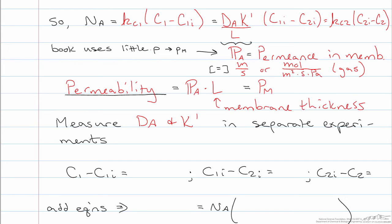The diffusivity and the equilibrium constant are typically measured in separate types of experiments, or possibly just from flux measurements you can determine the permeance, which is the combined effects of the diffusivity and the equilibrium constant.